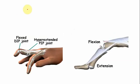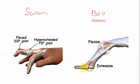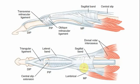To understand that, we need to know what swan neck deformity and boutonniere deformity are. Swan neck deformity is a condition in which there is hyperextension of the proximal interphalangeal joint and flexion at the distal interphalangeal joint. Boutonniere deformity is a condition in which there is flexion at the proximal interphalangeal joint and extension at the distal interphalangeal joint.